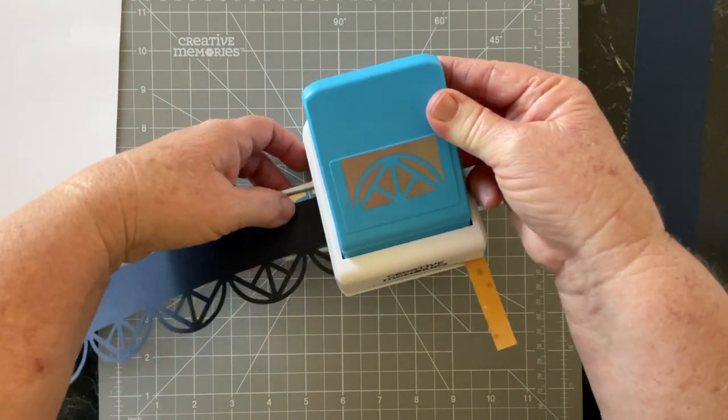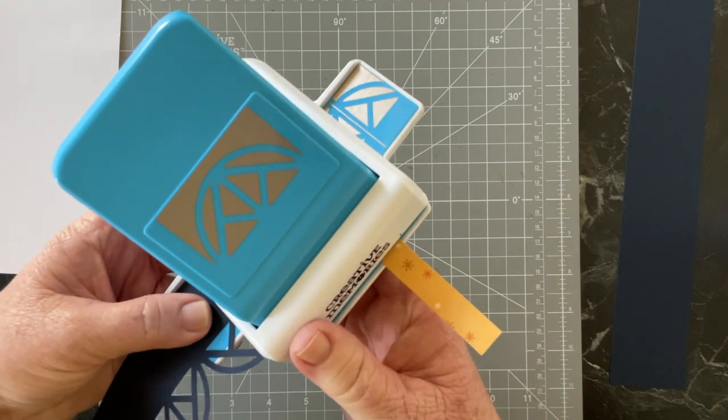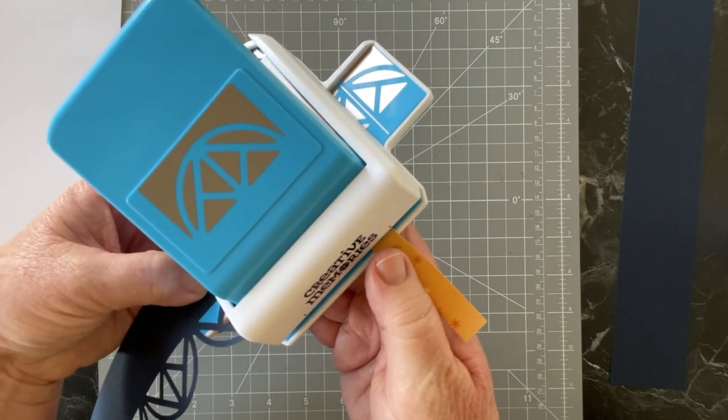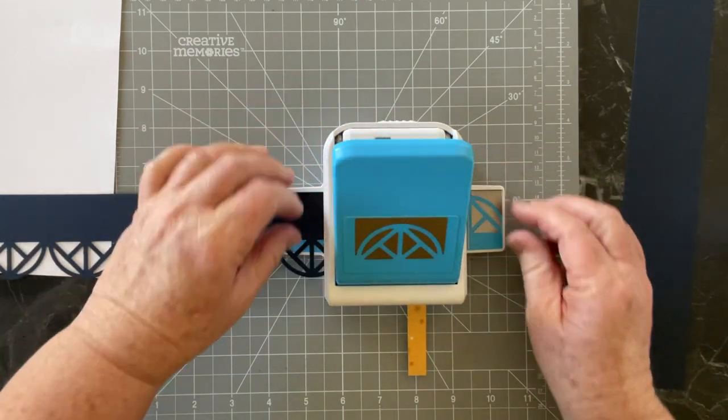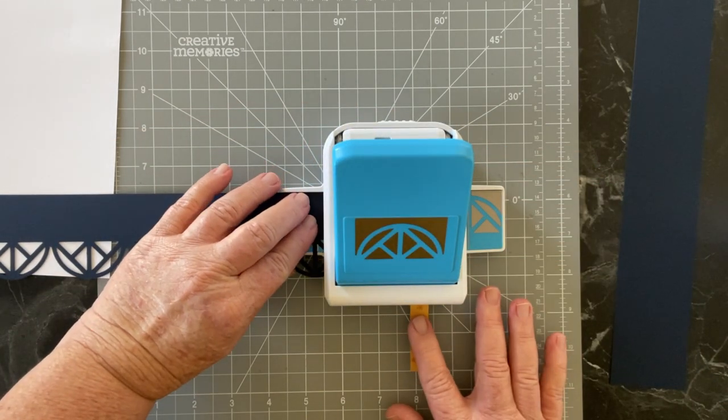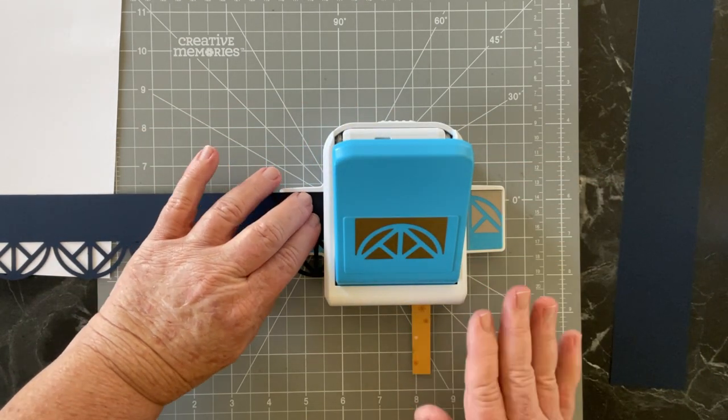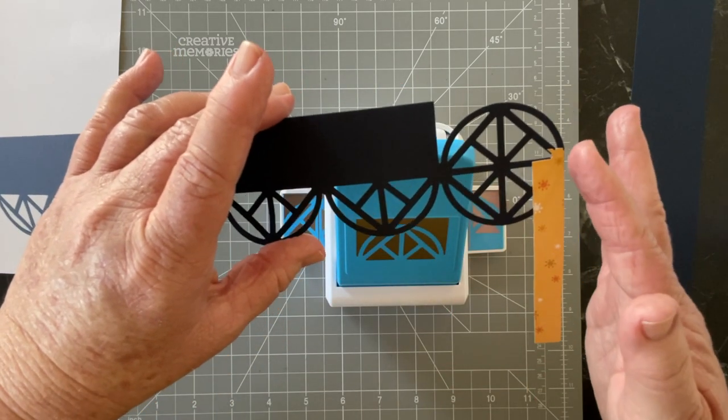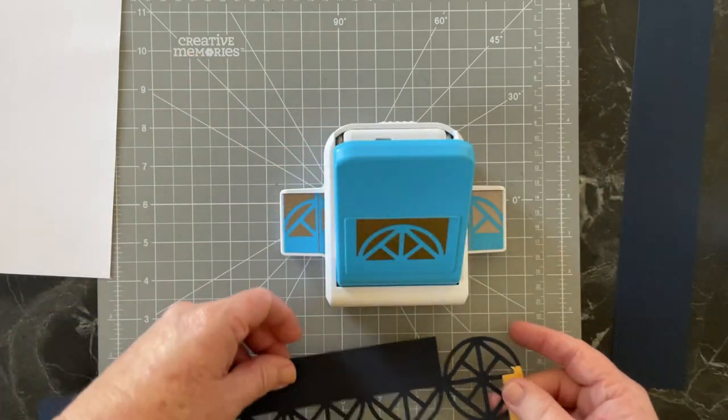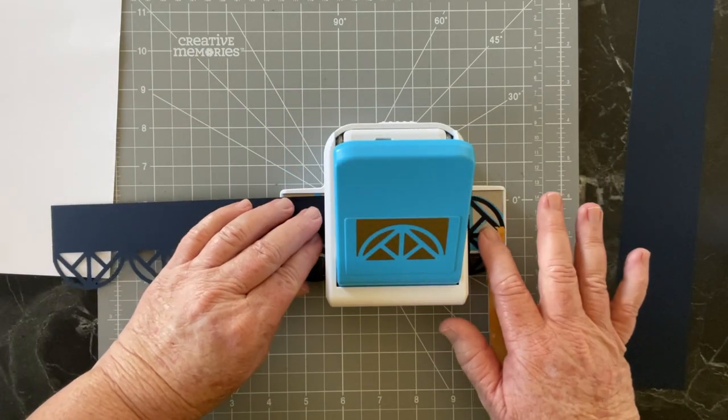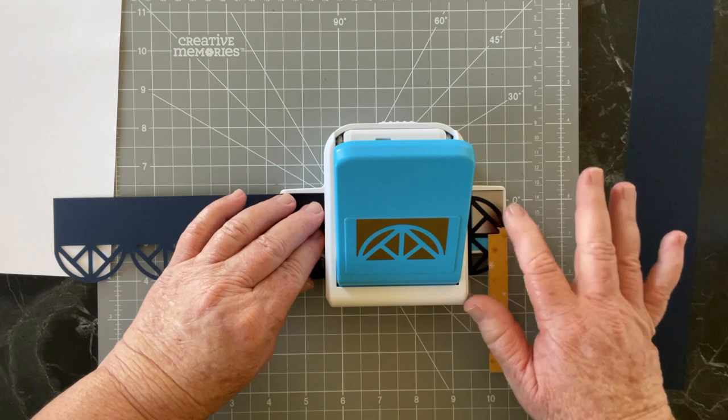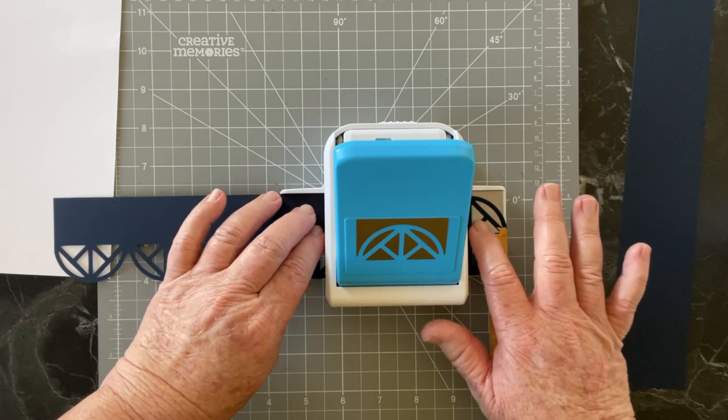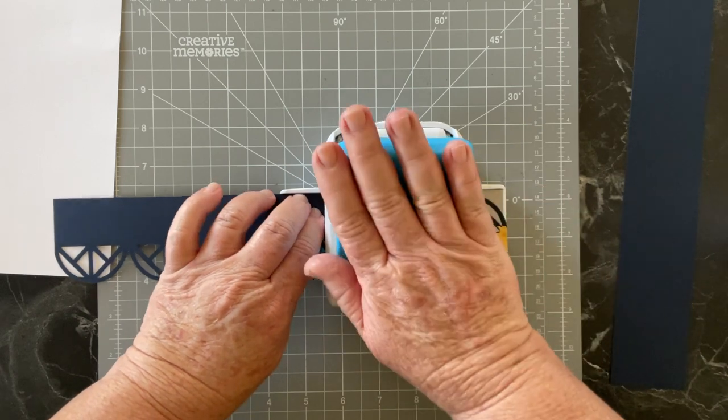So when I put it into the geometric frame punch, you can see I know where that line is. I'm just going to put it in and do my first punch. And as you can see, that gives you your first one. Then you continue, just move along, lining it up, making sure that it's all even on both sides and pushed up to the end, and punch.